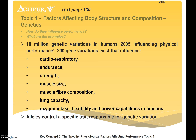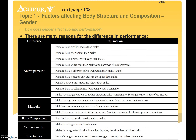Genetics and performance: there are 10 million genetic variations in humans, and as of 2005, about 200 gene variations have been identified that influence physical performance. These influence things like cardiovascular and cardiorespiratory endurance, strength, muscle size, muscle fiber composition, lung capacity, and oxygen intake - all affected by genetic variation.